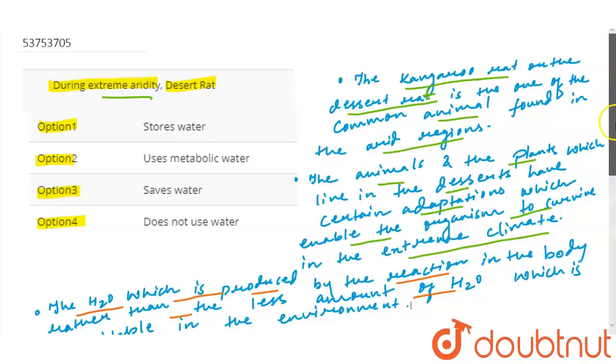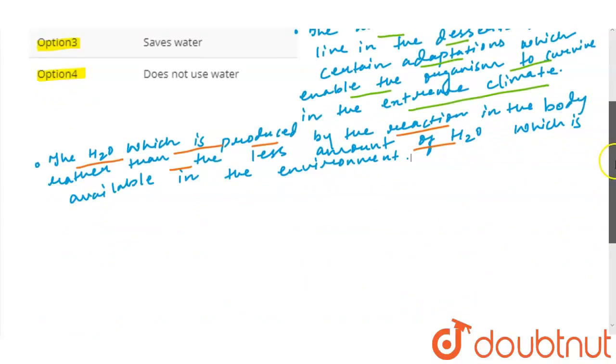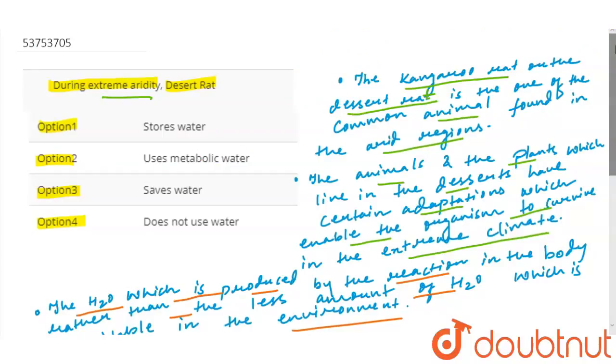So, the animals use the metabolic water. The answer for this question, what will happen? That is option two. Uses metabolic water. Thank you.